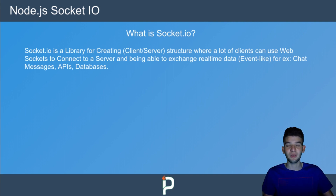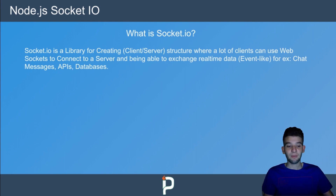Socket.io is essentially a wrapper around WebSocket — it's based on WebSocket to connect to a server and exchange real-time data. The real-time data part is very important since exchanging real-time data on a browser or over the internet is critical. The data you exchange is part of an event-driven system — for example, chat messages, APIs, databases. Chat messages are the classic example.